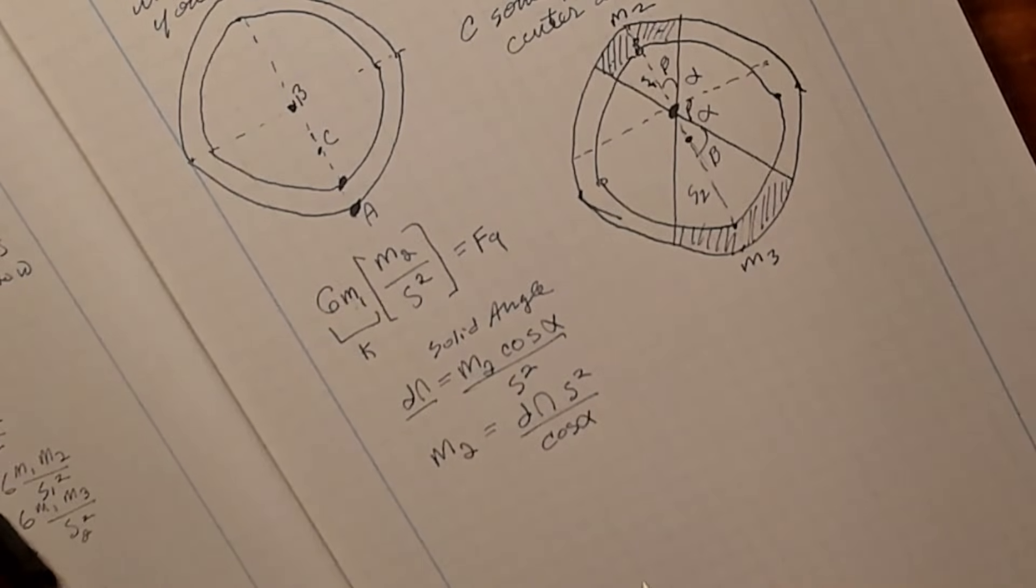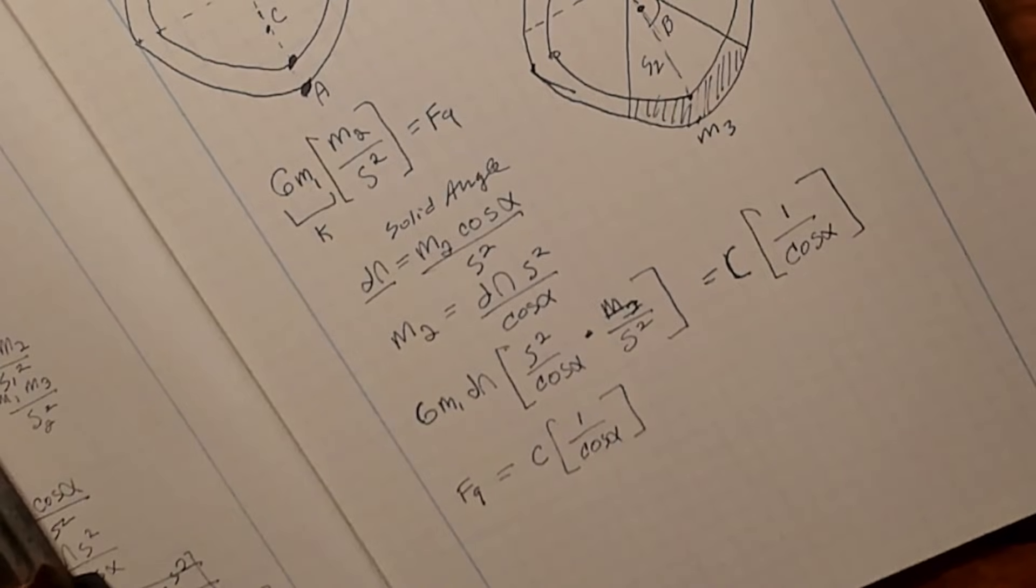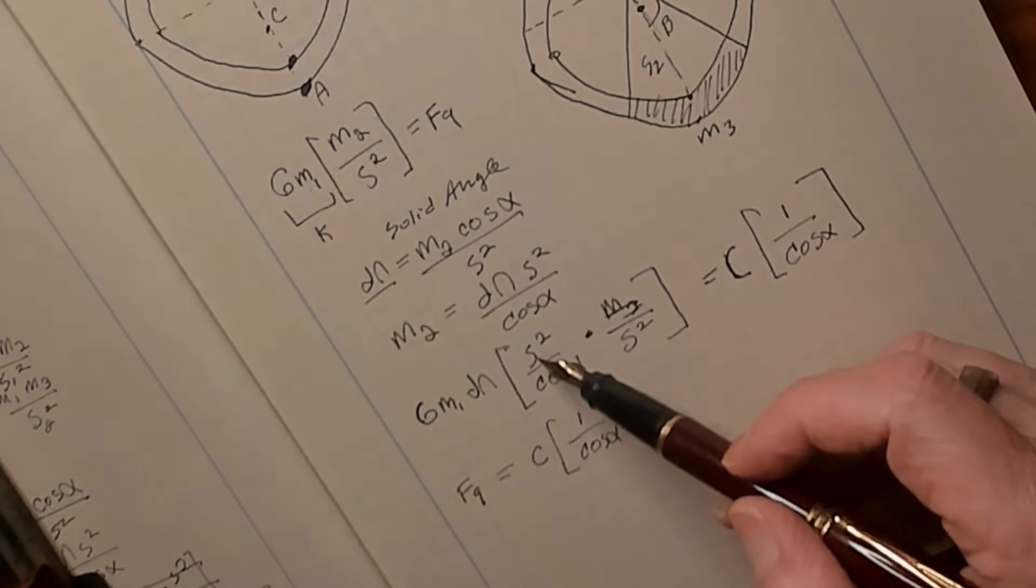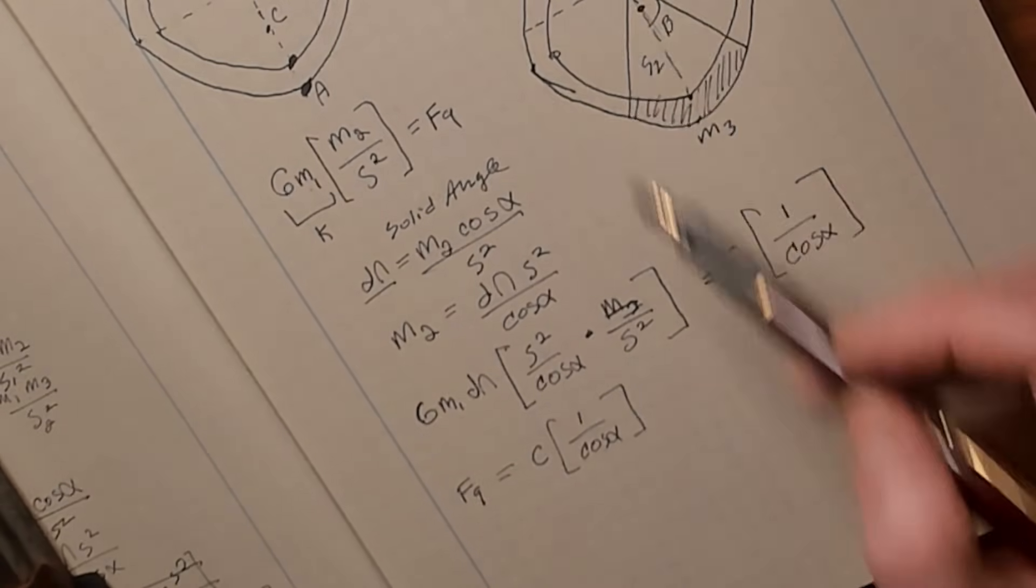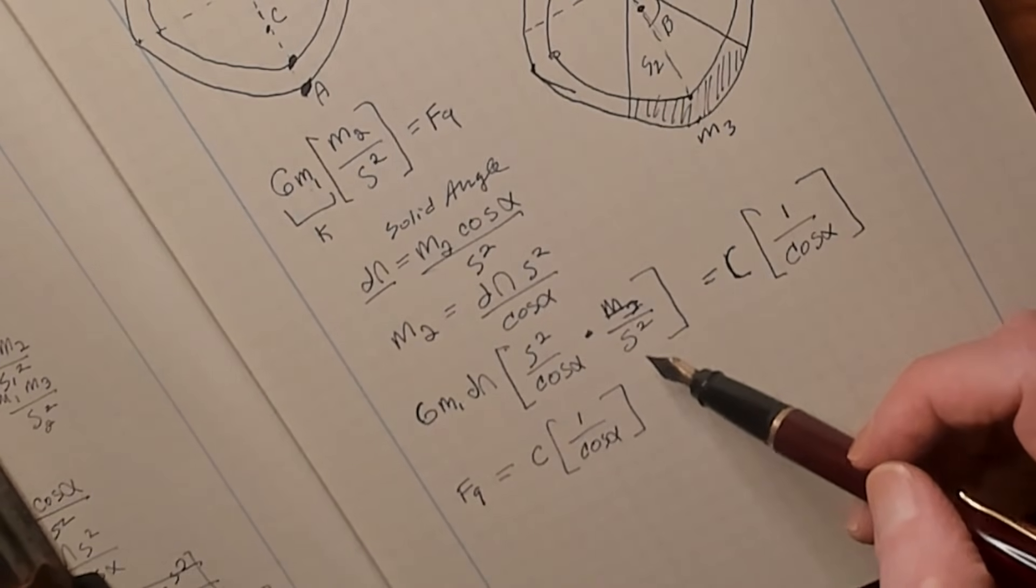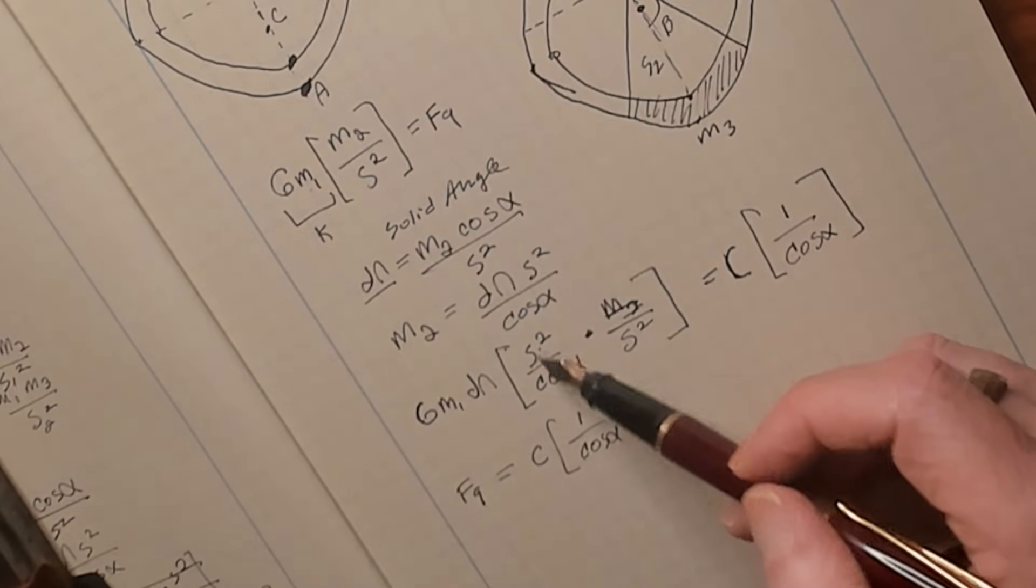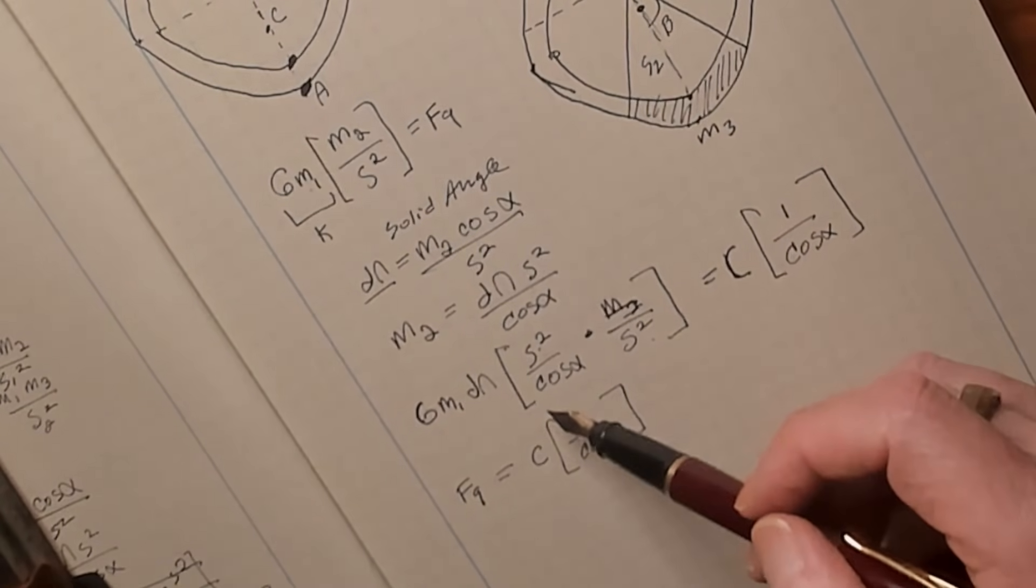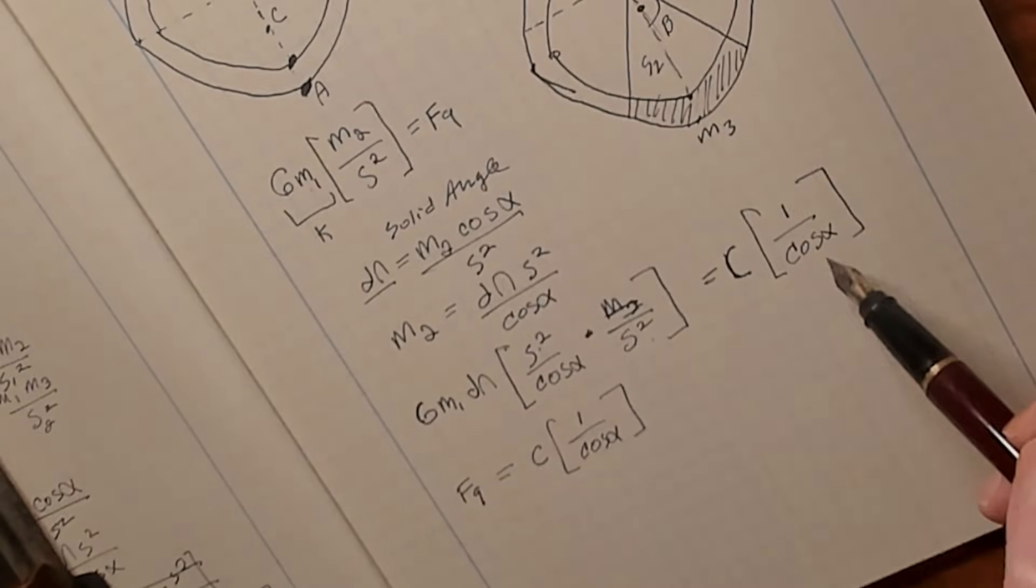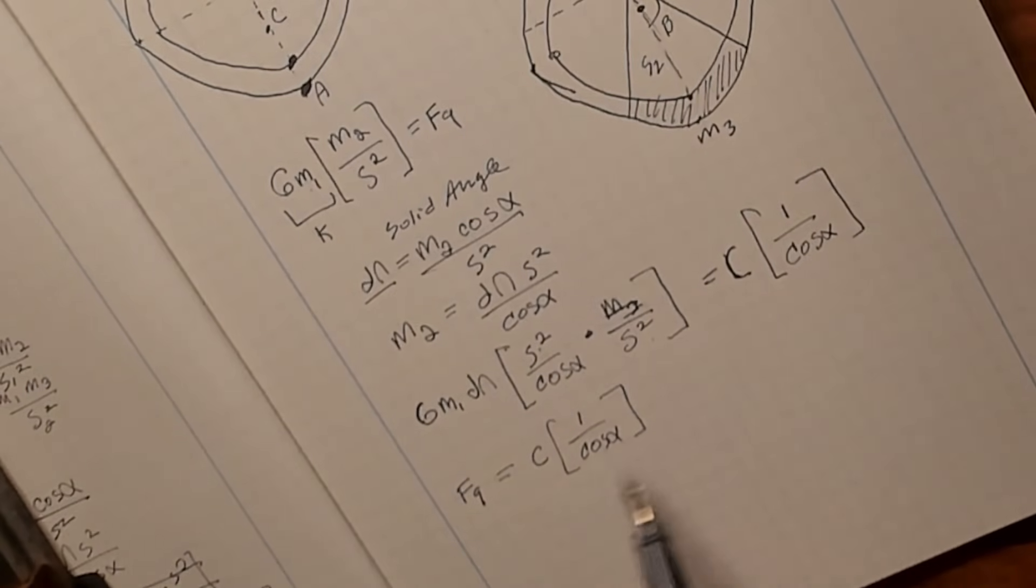Now here's where the magic of the shell theorem works out. Notice that the distance from point P to the center of mass of this shell cancels out. So you have s squared here and you have s squared on the denominator here. They cancel out and all you're left with is 1 over the cosine of alpha. This gives you the total amount of gravitational attraction.